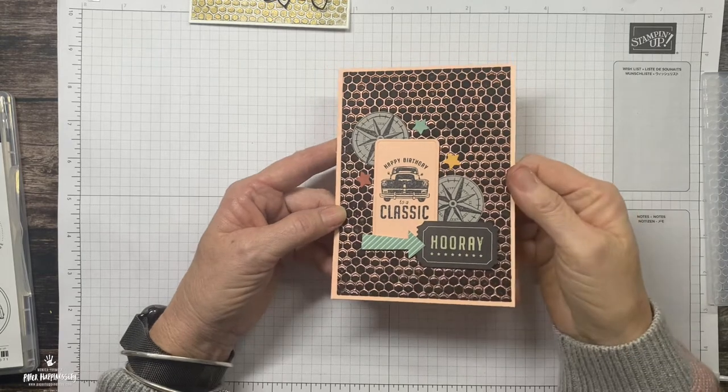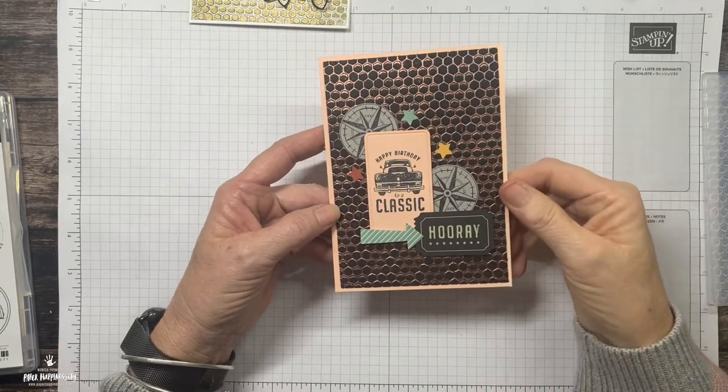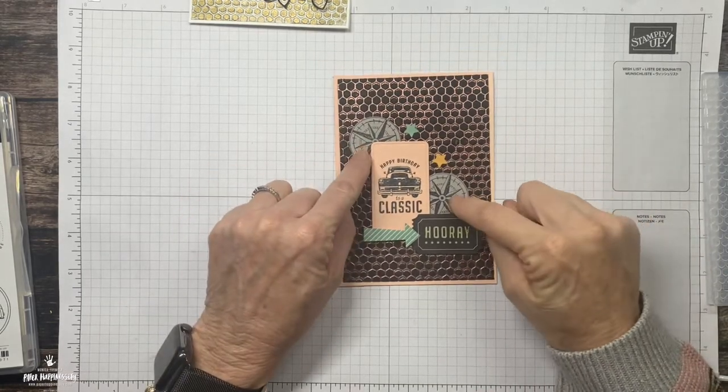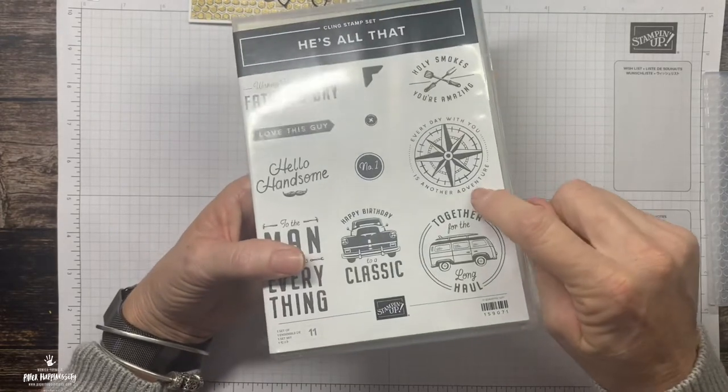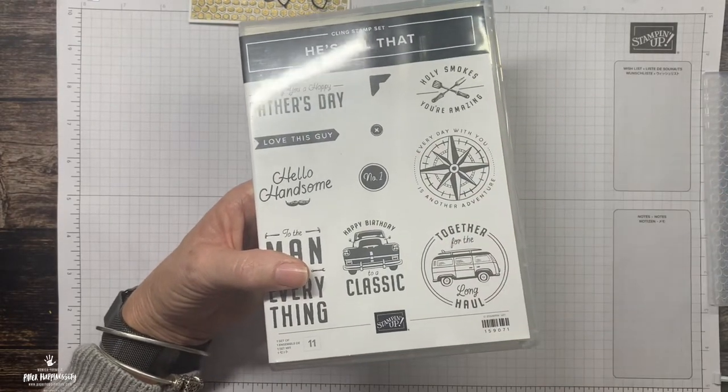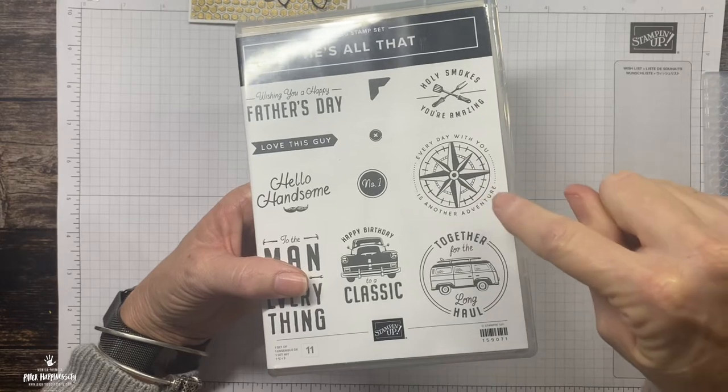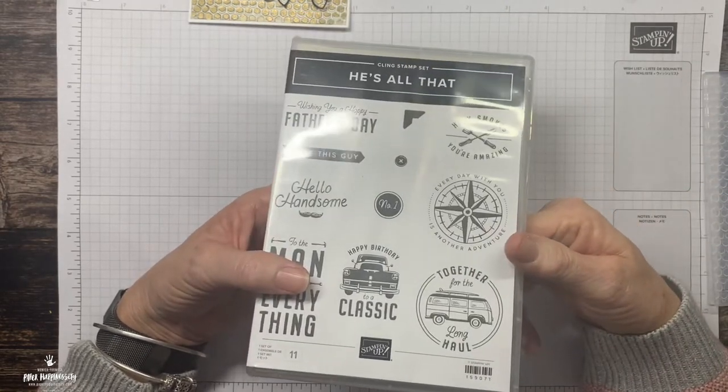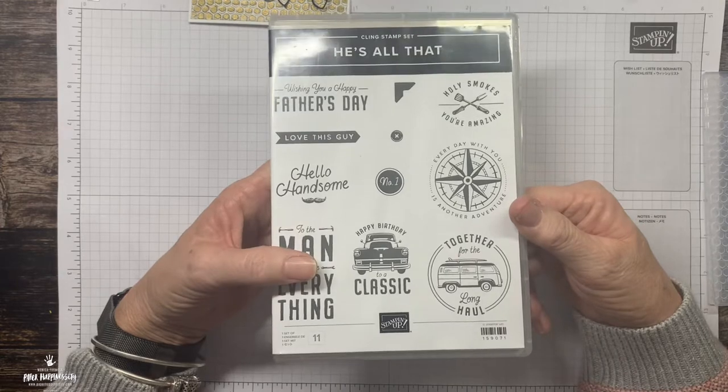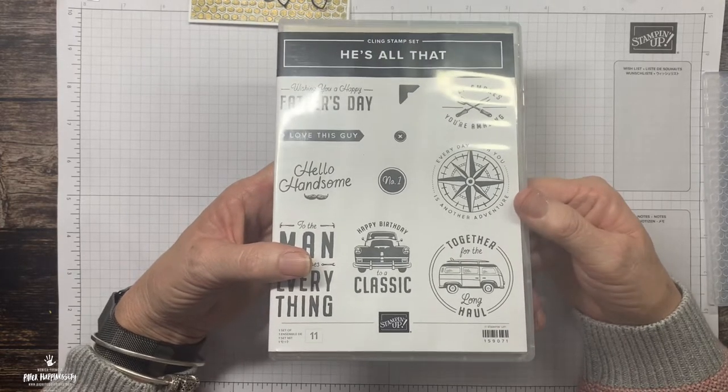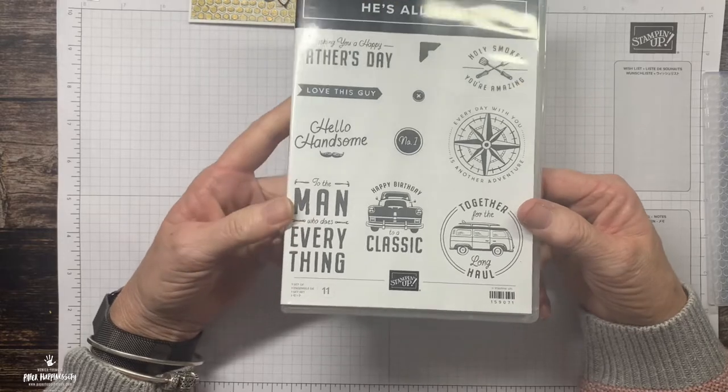In that pack of DSP you get two sheets of die cuts that you can push out and use on your projects. These images come from He's All That stamp set. This is the full image here but I didn't really want all those words, I just wanted the compass. I stamped the image and then punched it out using a 1 3/8 circle punch. If you don't have a circle punch you could find a die that you've got in your collection or just grab a pair of snips and fussy cut it.